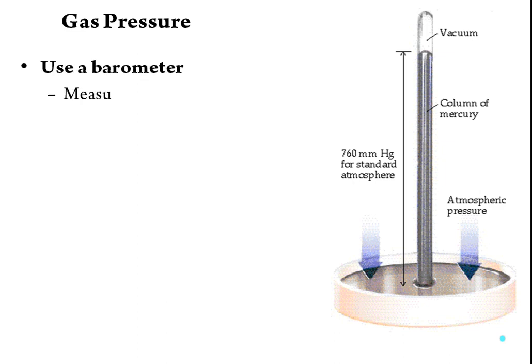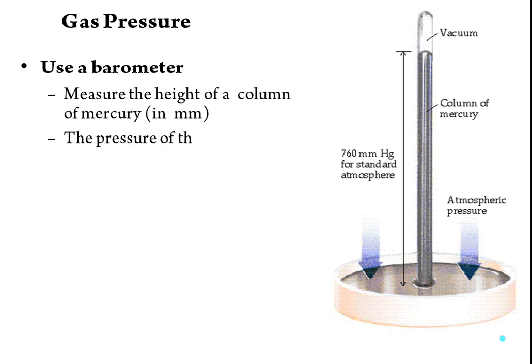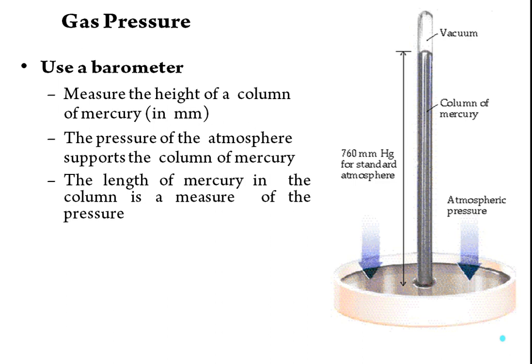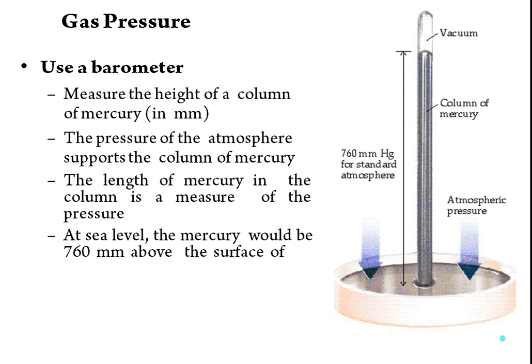Gas pressure is measured with the help of a barometer consisting of a column of mercury; the pressure of the atmosphere supports that mercury column. The length of mercury in the column is a measure of pressure. As the height of mercury increases, it indicates higher pressure. At sea level, the mercury column would be 760 mmHg above the surface.